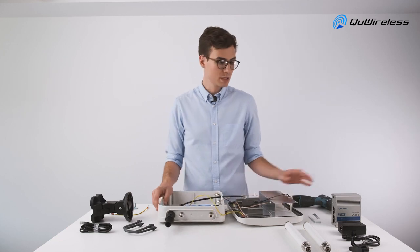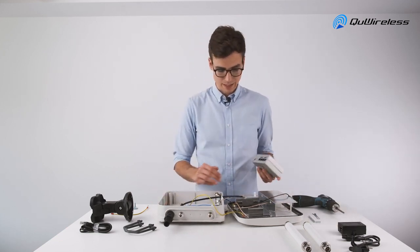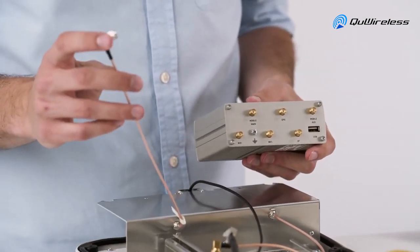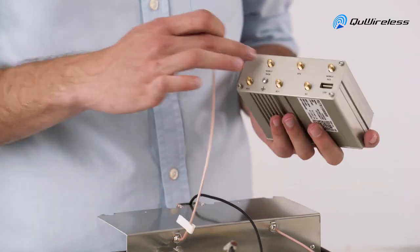Once it is done it's time to connect the Root X11 into the antenna. As you can see all the cables are labeled so you just have to match the cable to the port on the router.